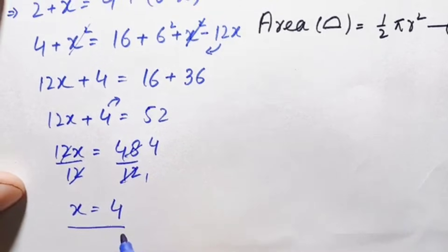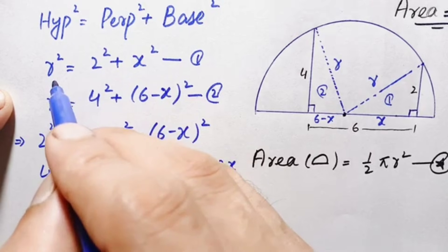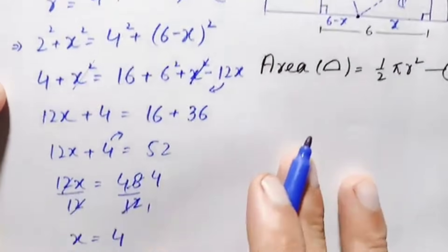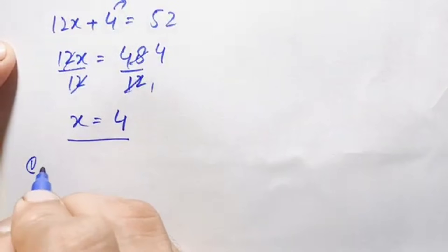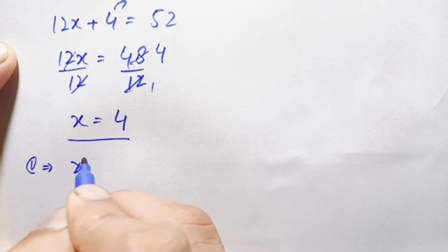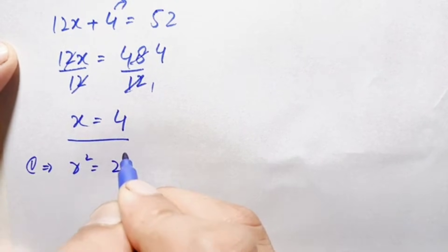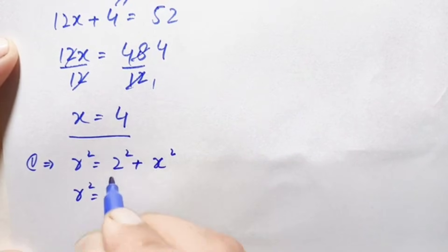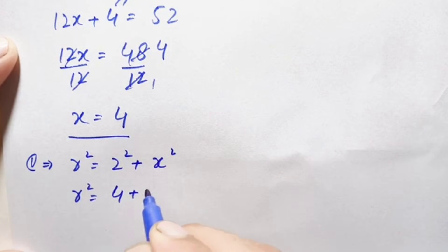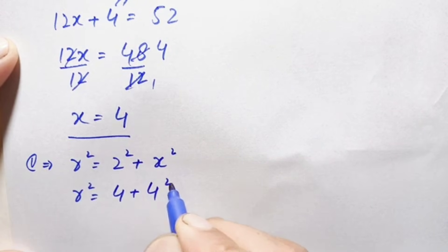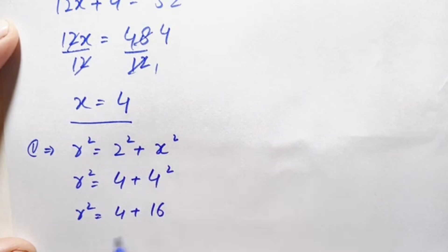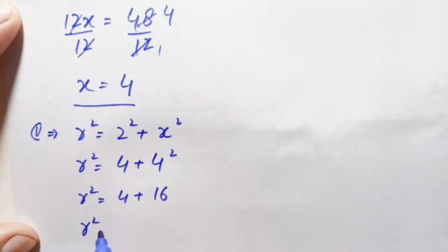Now we substitute x = 4 into equation number one to find r². Equation one becomes r² = 2² + x² = 4 + 4² = 4 + 16 = 20. Therefore r² = 20.